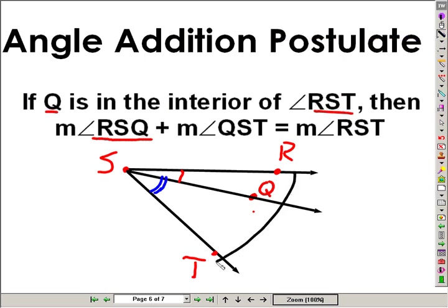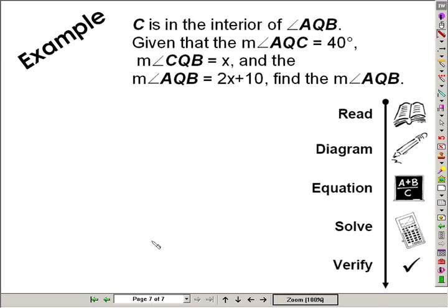And with angle addition postulate comes the ultimate word problem involving algebra and geometry. So let's go through the appropriate steps for doing a word problem. Step one, read. So after we've read the problem carefully, let's diagram this question. So let's start over.